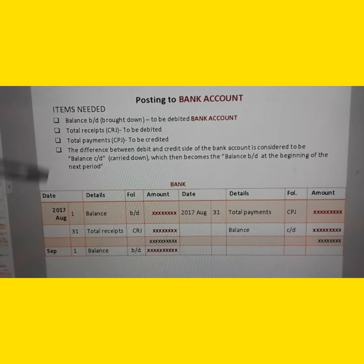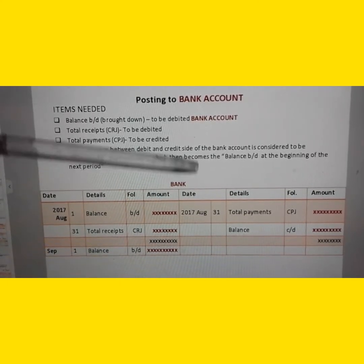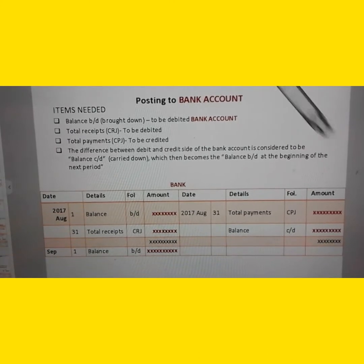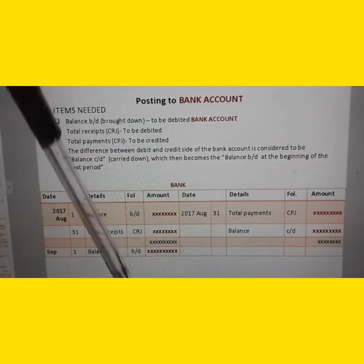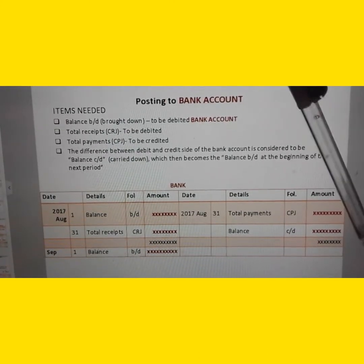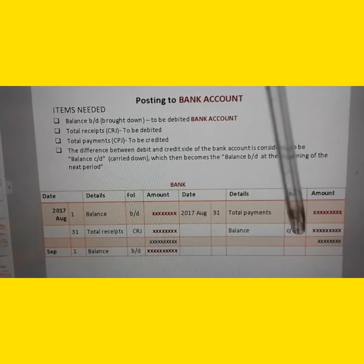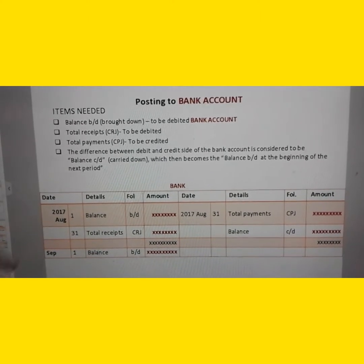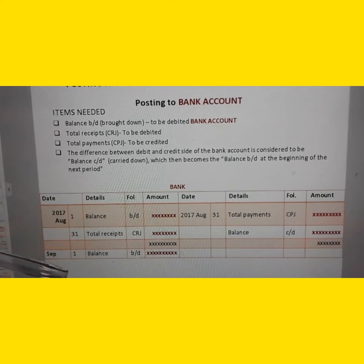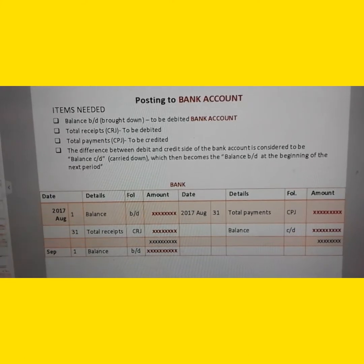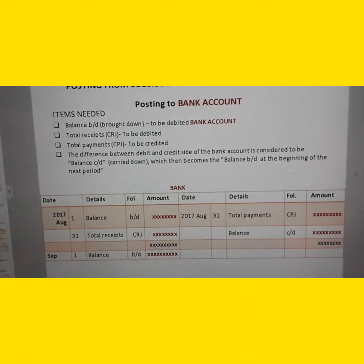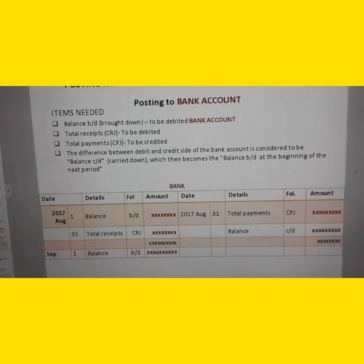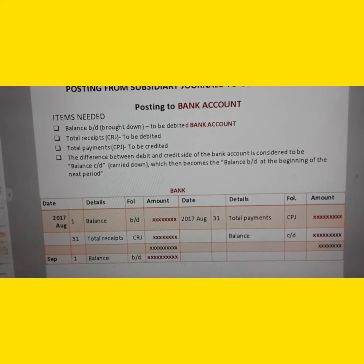The difference between the debit and credit side of the bank account is considered to be the balance carried down. This balance carried down then becomes the balance brought down of the next accounting period. Those are the items you need to record in your bank ledger account.